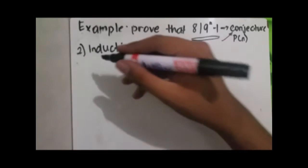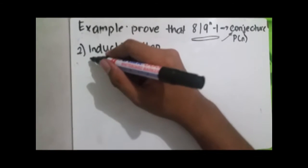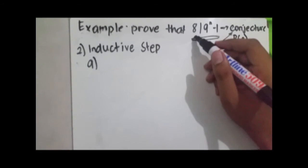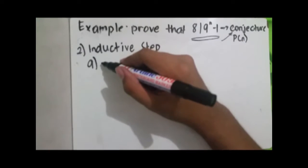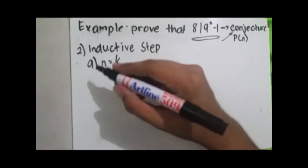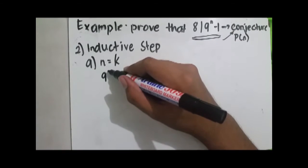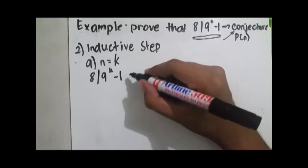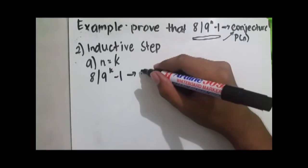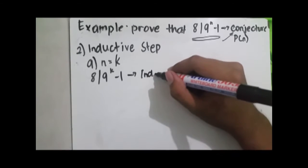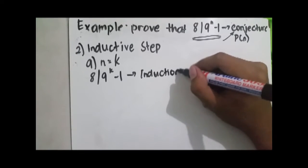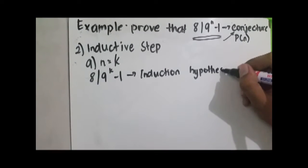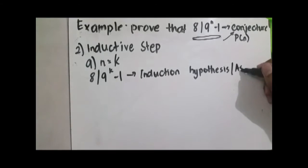For our second step, we need to do two things. The first one is we need to show that 9^n minus 1 is divisible by 8 for any number k. We let n be equal to k, so it becomes 9^k minus 1 is divisible by 8. This will be our induction hypothesis, or assumption.